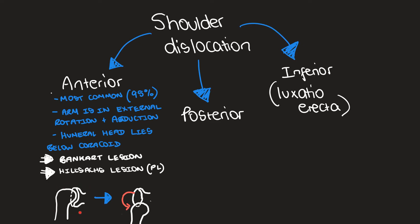Here on the left is the normal alignment of the shoulder joint. On the right, this is what an anterior dislocation looks like — the humeral head has moved inferiorly and should lie under the coracoid. There will be a defect in the posterolateral humeral head, which is a Hill-Sachs lesion. Corresponding to this, in the anteroinferior labrum, you'll get some injury — either soft tissue or bony — and that is a Bankart lesion.